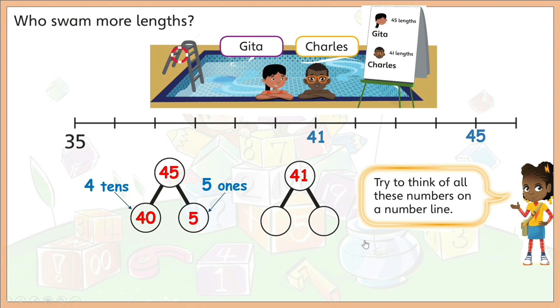Can you now fill in this part-whole model for number 41? 41 has 40 and 1. Now, children, write a number sentence comparing 45 and 41. Again, pause this video to do so. Okay, let's check. 45 and 41 have the same number of tens. They both have 4 tens or they both have 40. And that means we have to compare the number of ones.